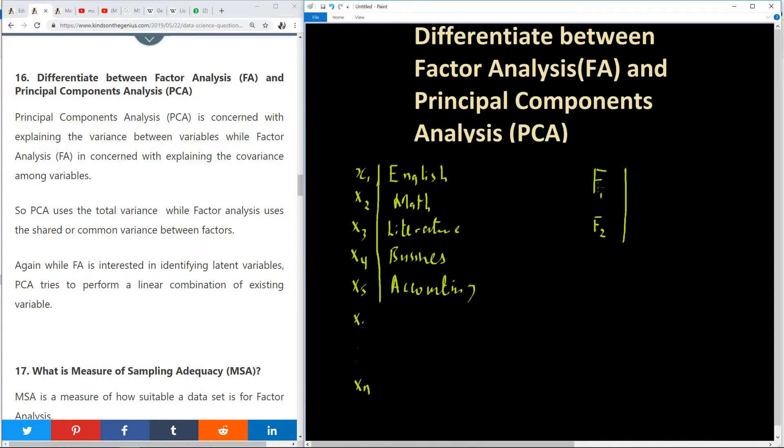And these factors are maybe quantitative and verbal reasoning. So if a student is good in quantitative reasoning, then he will likely do well in, let's say, maths, maybe accounting, and a little in business.